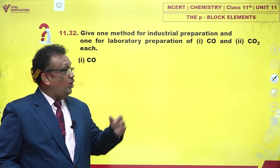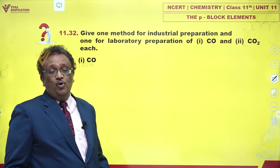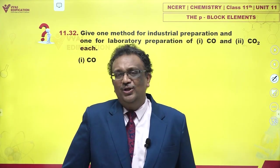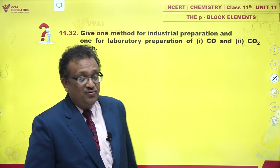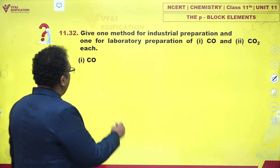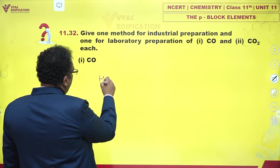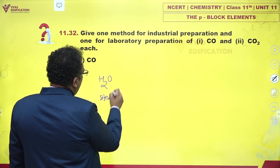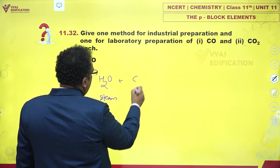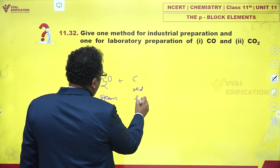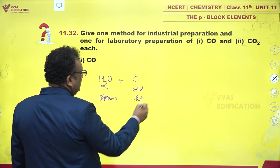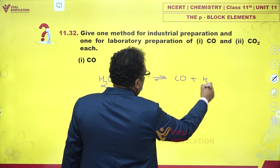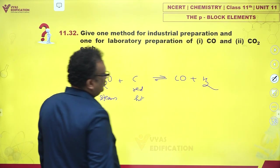When you talk about industrial preparation of carbon monoxide, you could actually use water gas. What is water gas? When superheated steam is passed over red hot coals, you find it gives CO and H2. You've got carbon monoxide there — this is one of the very popular methods by which carbon monoxide is produced.